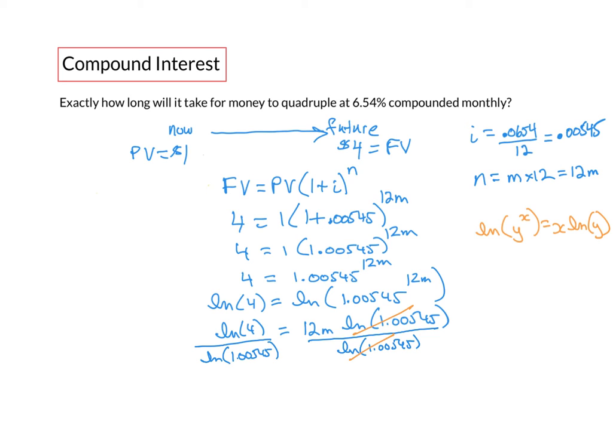In fact what you want to do is take the ln of 1.00545 first, put that into memory, then take the ln of 4 and divide by recall memory. And when we do we end up with 255.0584571 equals 12m.